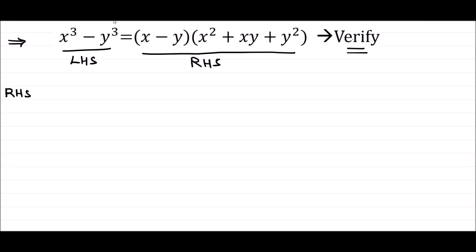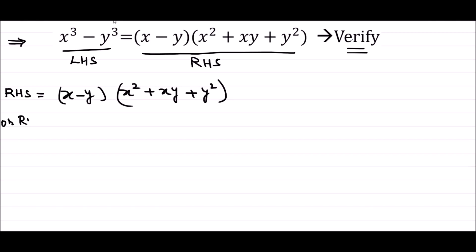The right hand side, as given by the question, is x minus y into x square plus x y plus y square. We are going to simplify this by first multiplying x with x square plus x y plus y square, then minus y with x square plus x y plus y square.